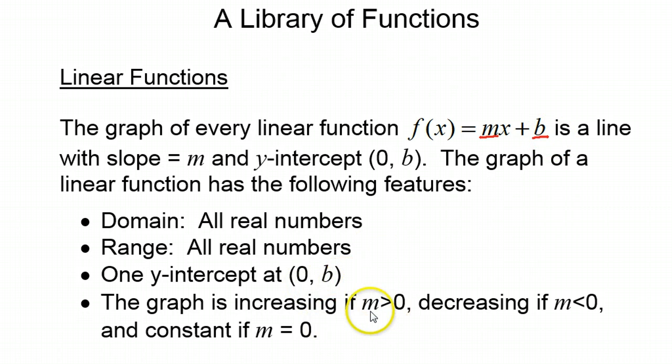There will be one y-intercept at (0, b), and if m is positive, that means the slope is positive, and you should expect to see the slant going uphill like this from left to right. If the slope is negative, it should fall left to right. And the steeper the line, the greater the absolute value of the slope.